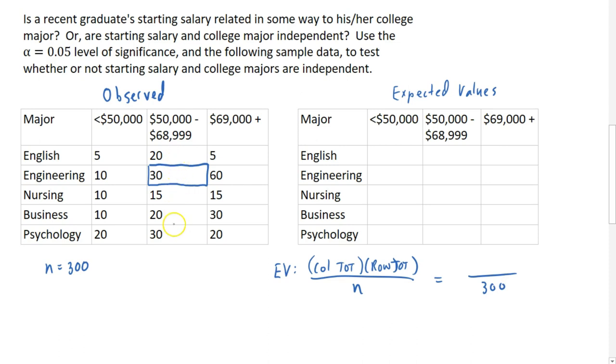So to find n, we just add up every single value in this table. This is from a random sample of 300 people, so that's n. And then we take the column total, so for this particular cell, I would want the column total for this middle column, which is 115. And then I would multiply by the total for this second row, which is 100. And if I take 115 times 100 divided by 300, I get approximately 38.3. So the expected number of people who should fall into this category, if we have the assumption that college major and starting salary are independent, the expected number in this category would be 38 and a third.